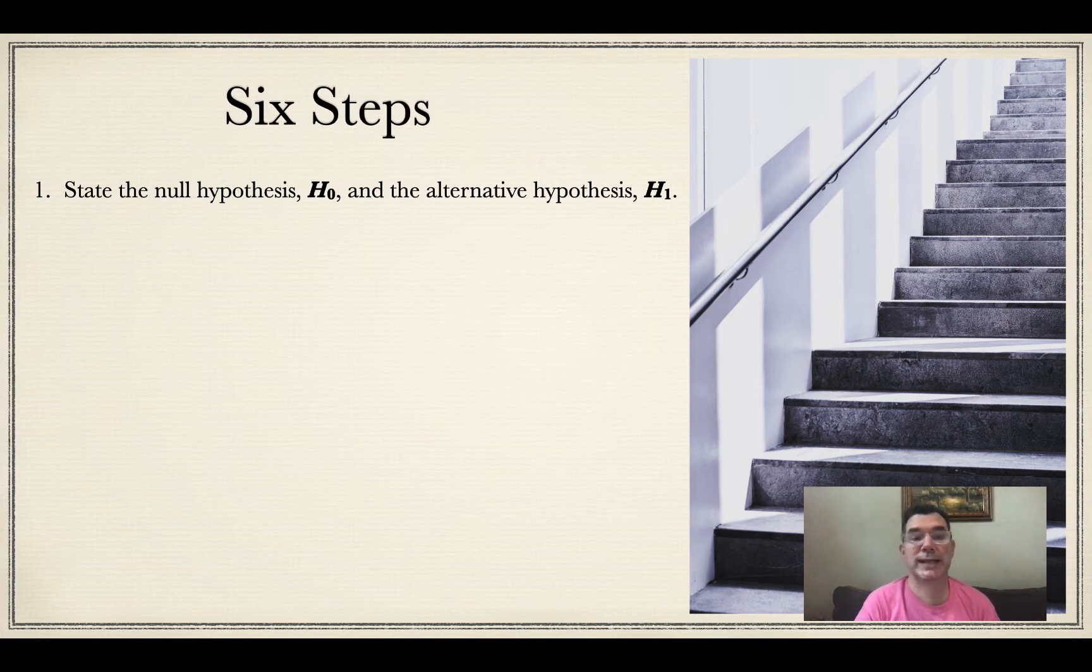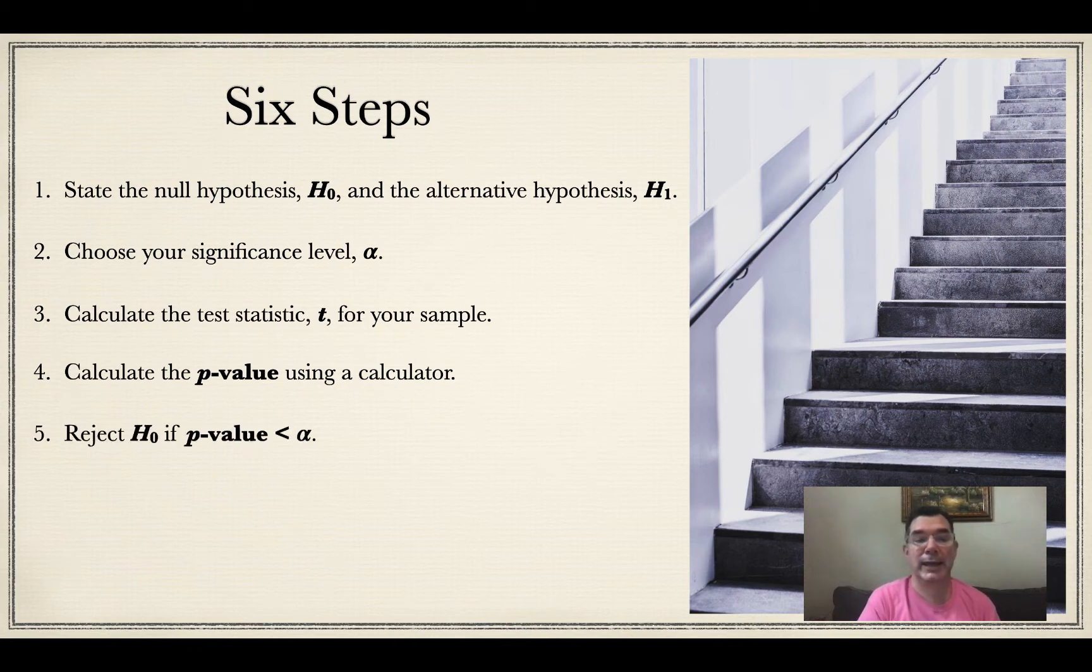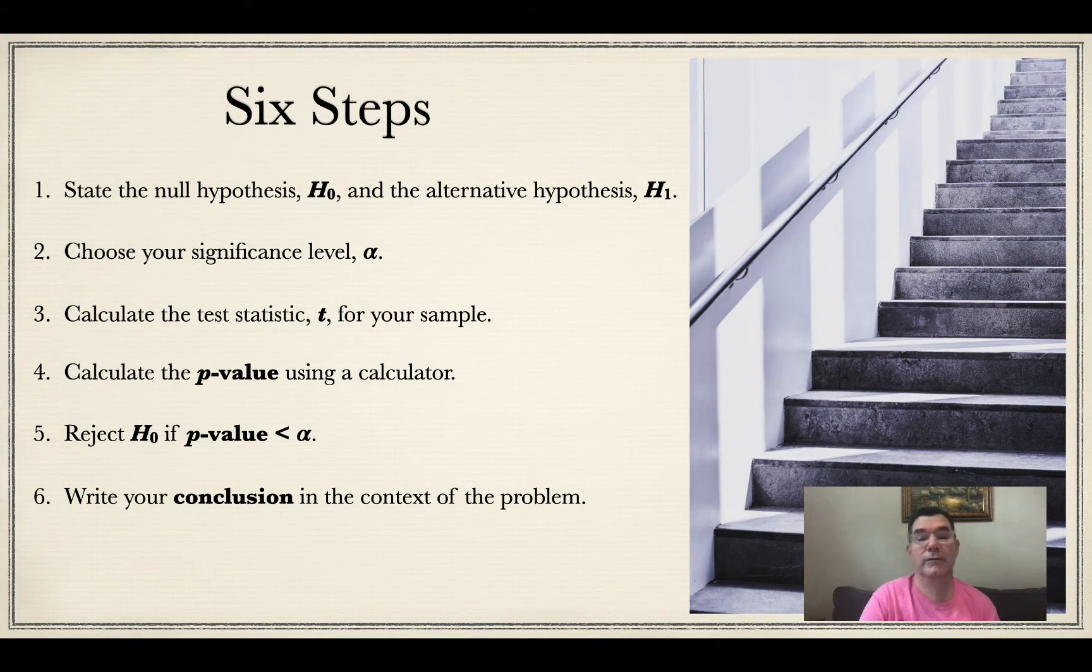The first thing we do is state the null hypothesis H0 and the alternative hypothesis H1. Then we choose a significance level as a percentage and call that alpha. The third thing we do is calculate the test statistic t for our sample when we are collecting data. Then we calculate a p-value using a calculator. If the p-value happens to be less than our alpha, then we reject H0. Regardless of whether we accept H0 or reject H0, we write our conclusion in the context of the problem.